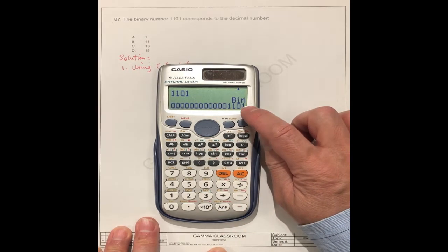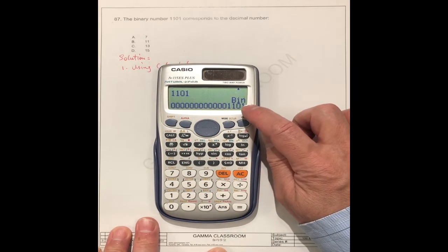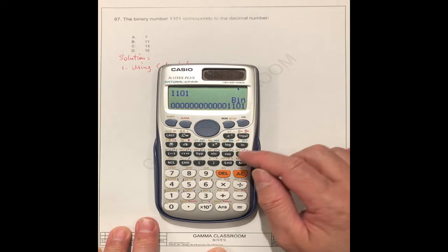After input, the equal for this one. You see, it's 1, 1, 0, 1 for the binary. For now, you can transfer to any what you want.